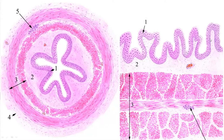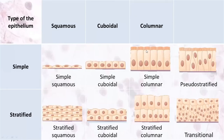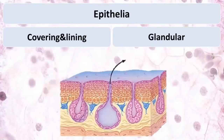We have discussed all types of covering and lining epithelia: six basic types — simple squamous, simple cuboidal, simple columnar, stratified squamous, stratified cuboidal, stratified columnar — plus two special types: pseudostratified (belonging to simple epithelia) and transitional (a kind of stratified epithelium). There is also a glandular type of epithelia, present in the glands.